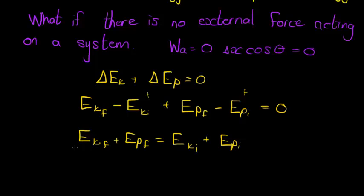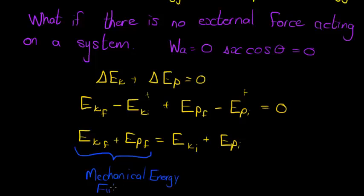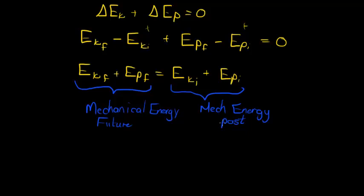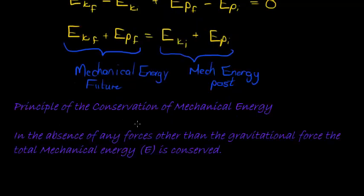Please notice that KE + PE is mechanical energy. So mechanical energy in the future equals mechanical energy in the past — that's the initial mechanical energy. And that's how we get to the conservation of mechanical energy. The principle states that in the absence of any forces other than the gravitational force, the total mechanical energy is conserved.